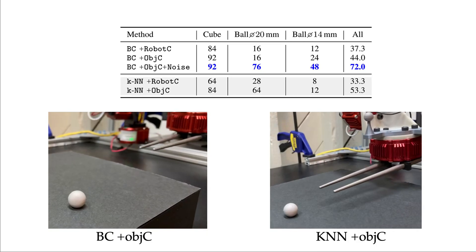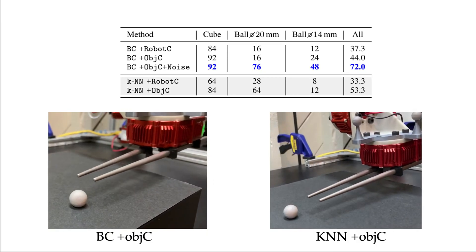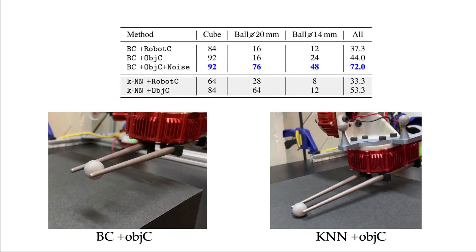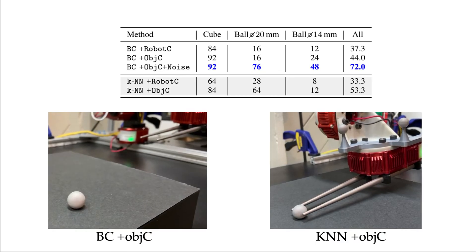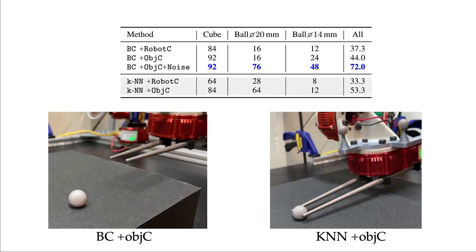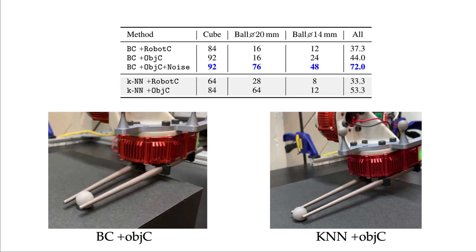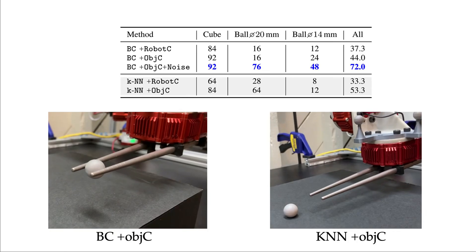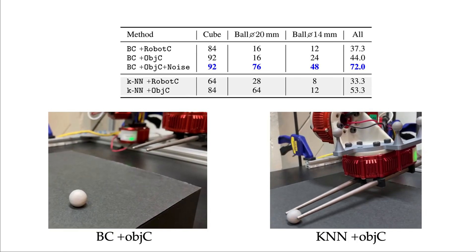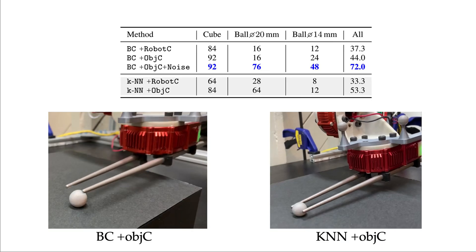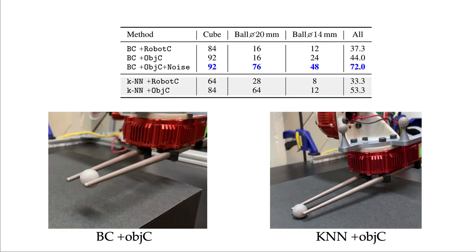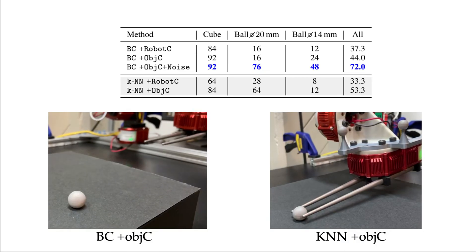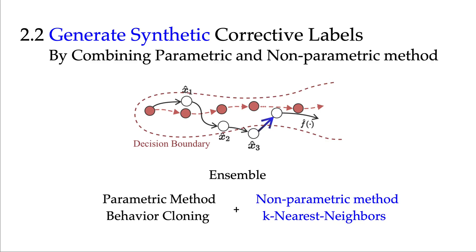Empirically, we also observe that the two methods have different causes of failure, which kind of conform with our previous hypothesis. The behavior cloning agent can deviate from the collected demonstration, and that might cause it to fail the task. The KNN agent, by the way, I didn't pause the video here, the video is still playing. The KNN agent sometimes got stuck in the middle and therefore couldn't complete the task. But it does visit those states that are closer to expert demonstration. It stays close to what demonstrations look like.